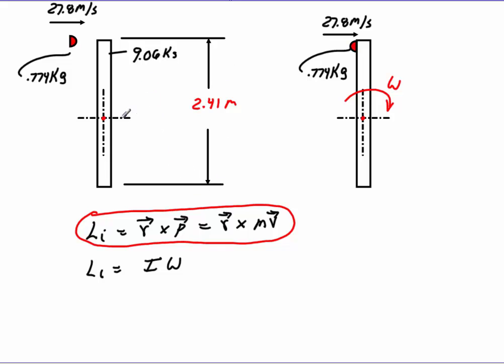Now my R distance here, I'm taking from here, is going to be R equal to 2.41 divided by 2. That's going to give us this value right there. I'll just do it in my calculator to make sure I do not make a mistake. And that's going to give me 1.205. So my R value is going to be 1.205 meters.